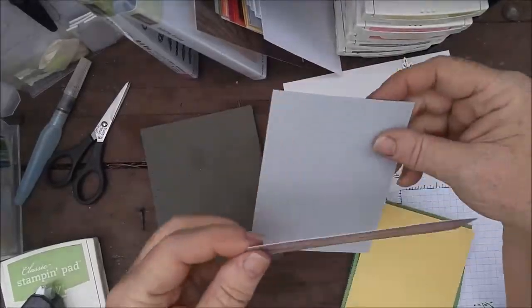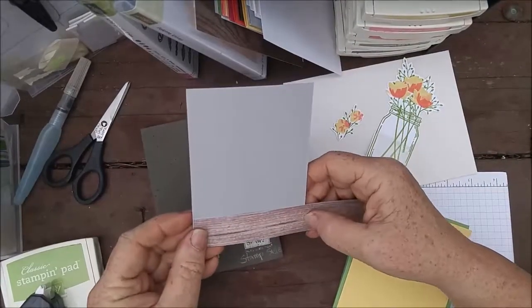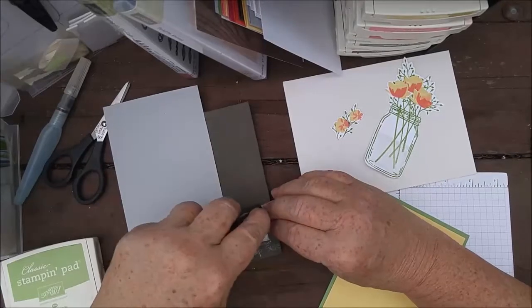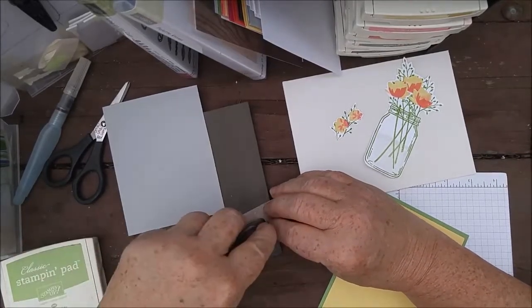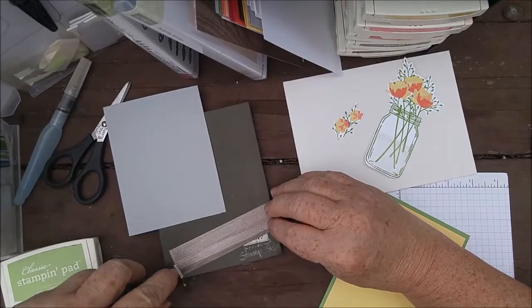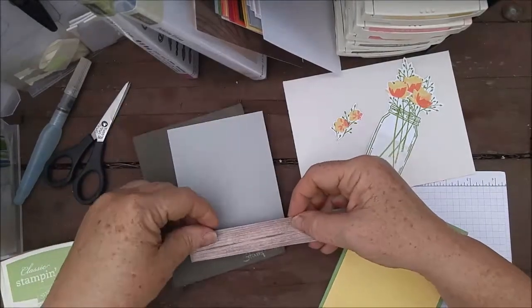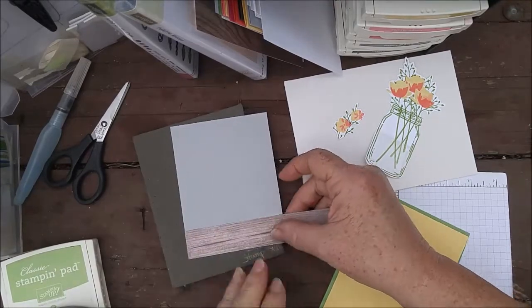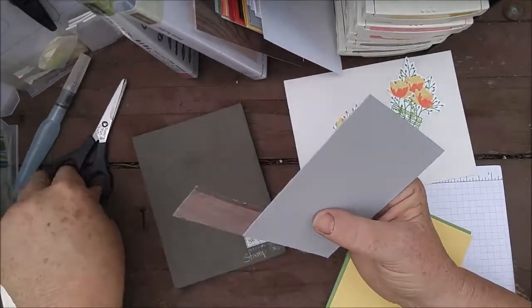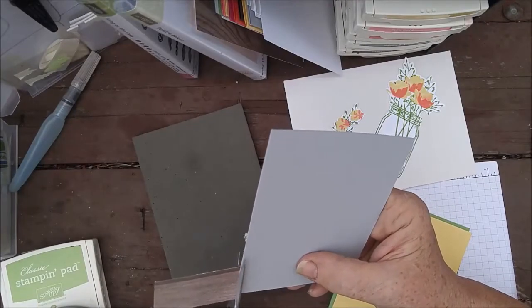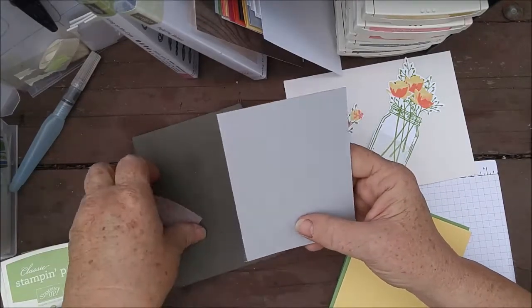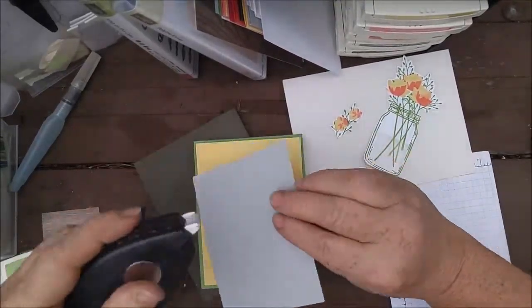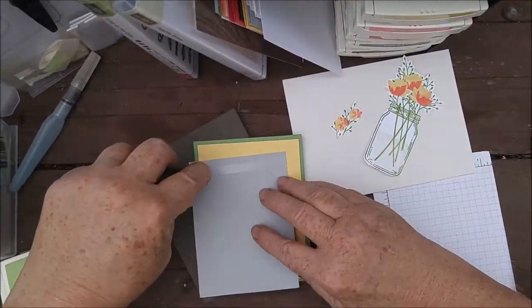I think I'm going to use that strip of the Designer Series Paper right across here. I'm trying hard not to get adhesive on my Stampin' Pierce mat. Just trim that off. I could use my trimmer. Snips are quick.